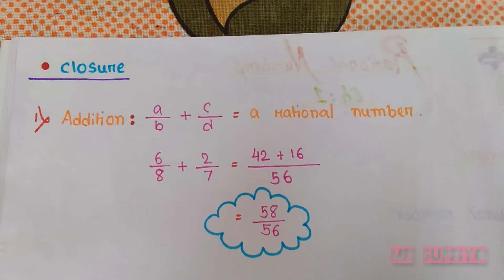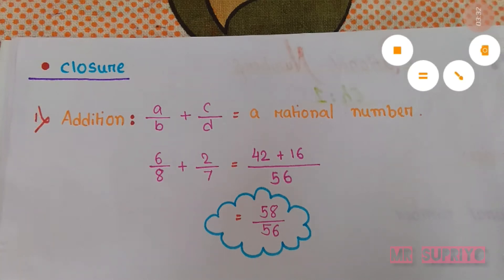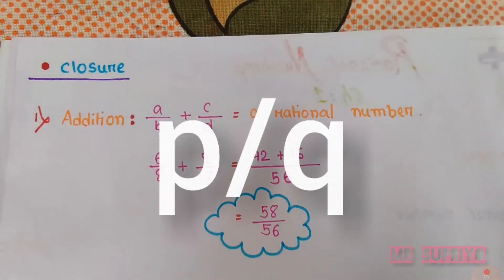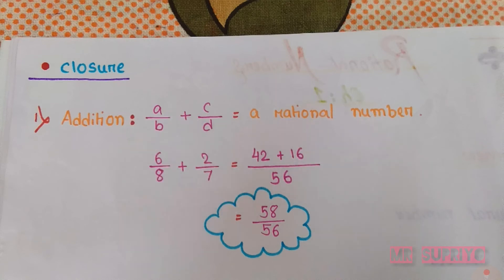42 plus 16 is equal to 58, so our answer is 58/56. You can see that two rational numbers were added and the answer that came is also a rational number. The conditions of rational numbers that we discussed in our first video: a rational number should be in P/Q form, where P and Q both should be integers, and Q should not be zero. If all these conditions are followed, then any fraction-like term can be called a rational number.